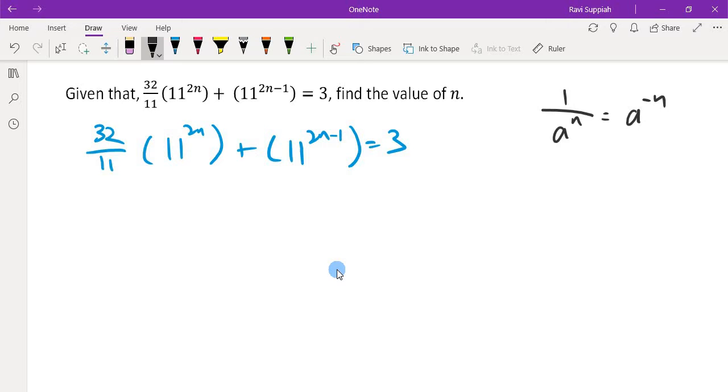If I switch a term from numerator to denominator or vice versa, the sign of the power will change. So 1 over 11 is the same as 11^(-1), and this is also multiplied by 11^(2n). Then plus 11^(2n-1) equals 3.